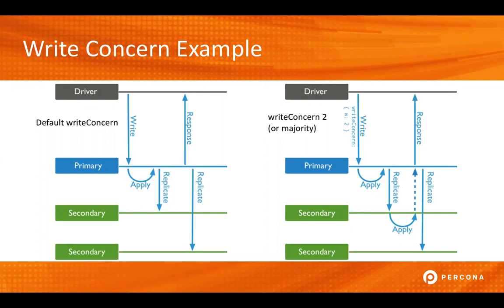On the left-hand side, you can see with our default write concern: when we have the write coming in from the application, it is written and applied on the primary, and at that point it is responded back to the application saying that we have been able to process that write request. At some later point, we then replicate to the additional nodes in the replica set.